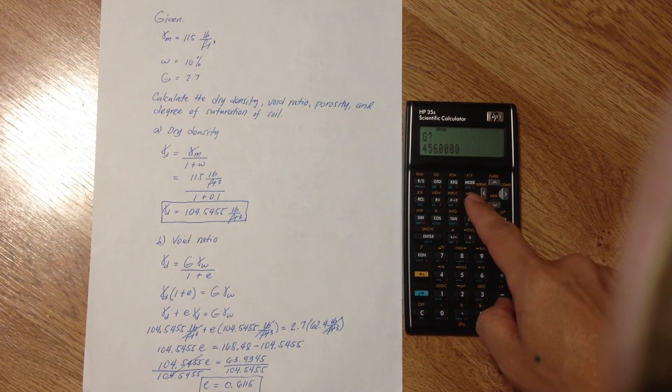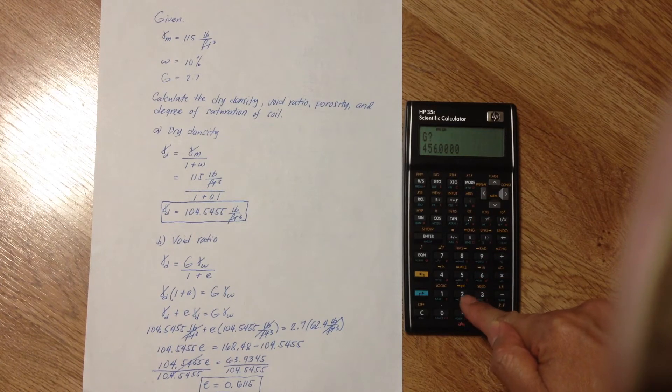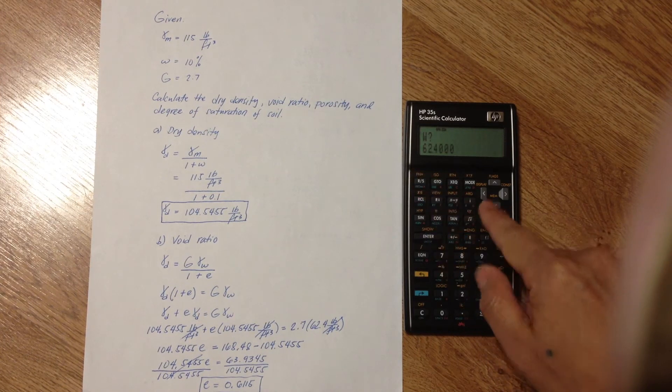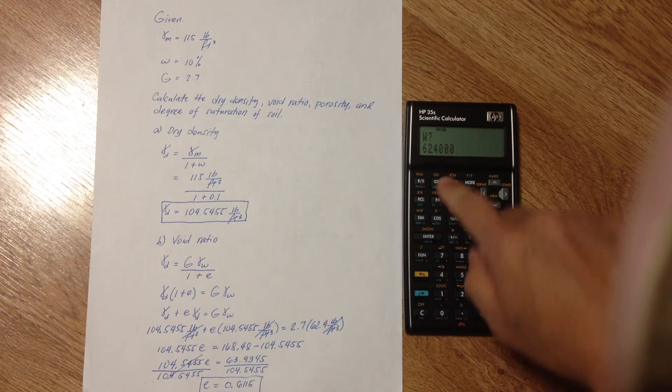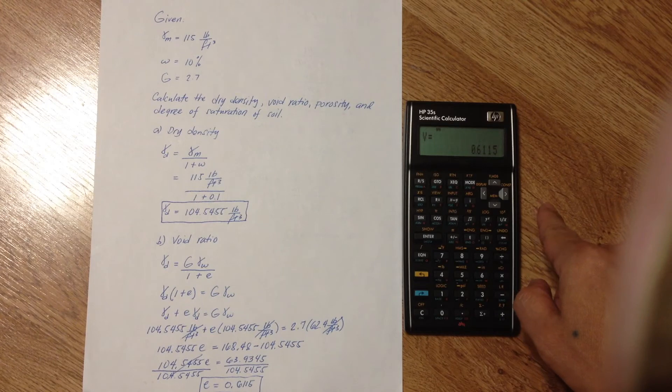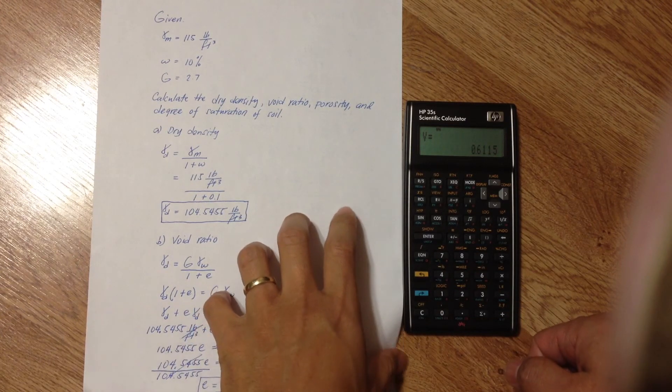And G is the specific gravity, which is 2.7. We need to put down the 2.7, and then RS. Unit weight of water is 62.4. It's already there, so just press RS. And that's our void ratio, 0.615. It's right there. So, that's the correct answer.